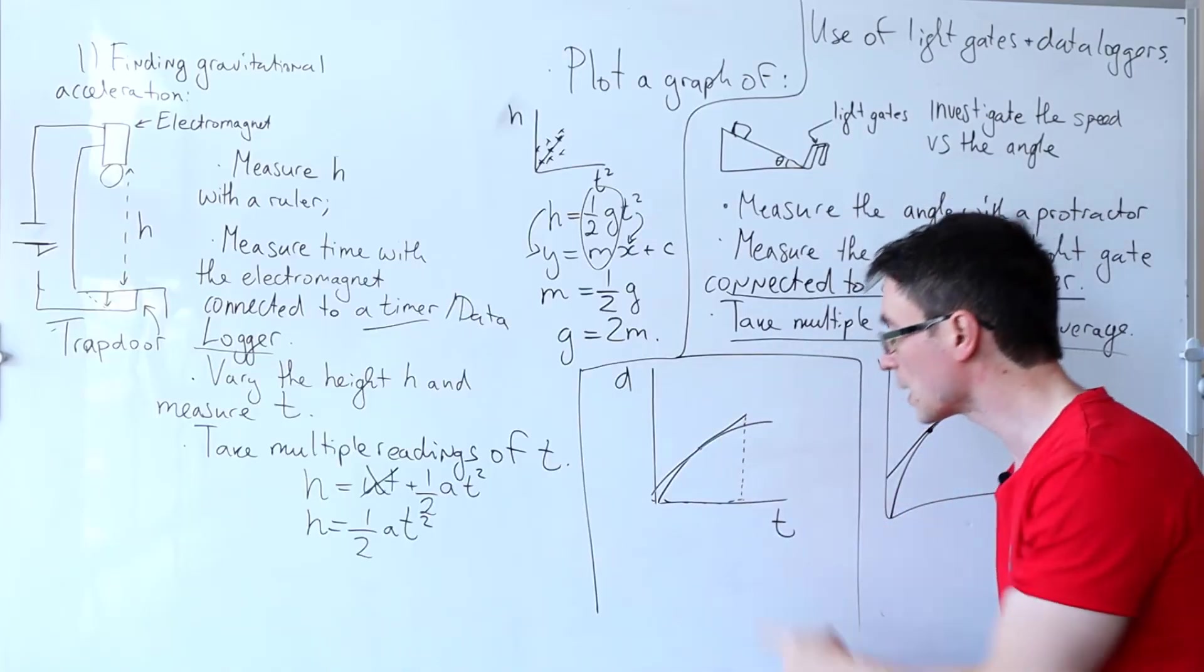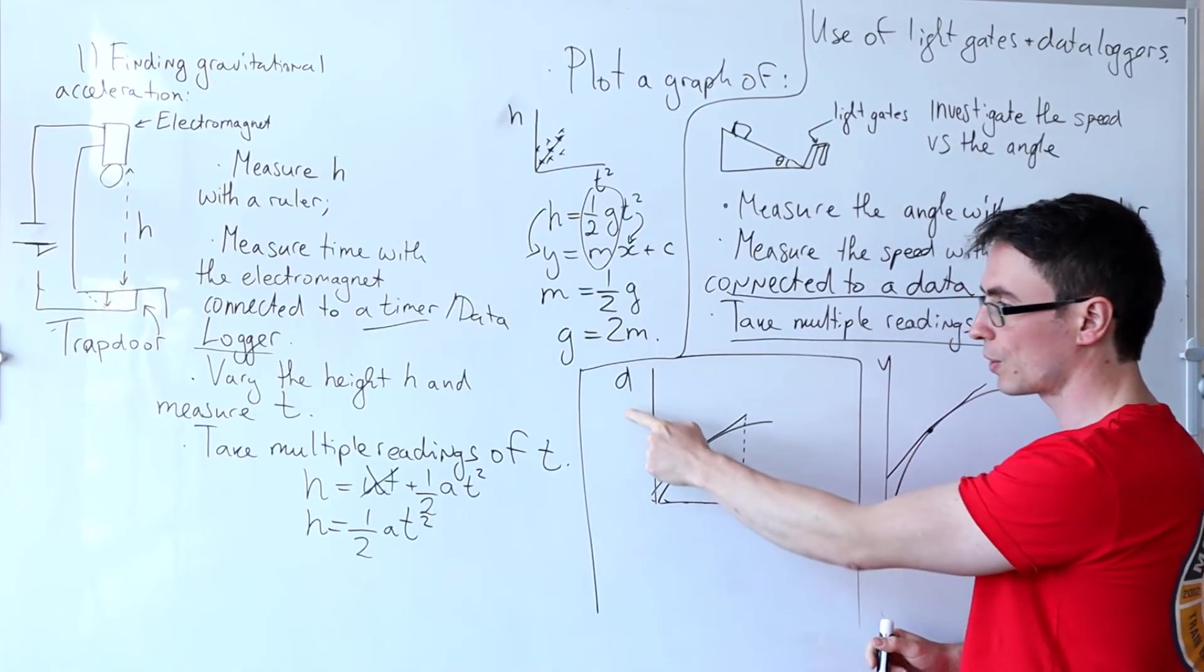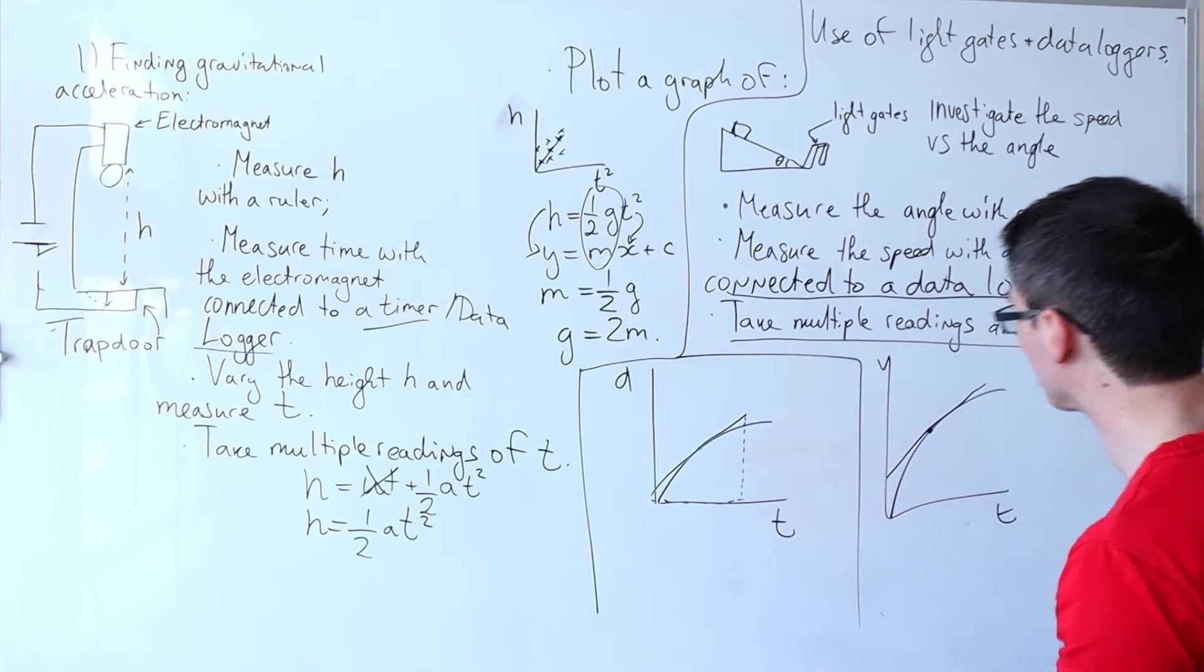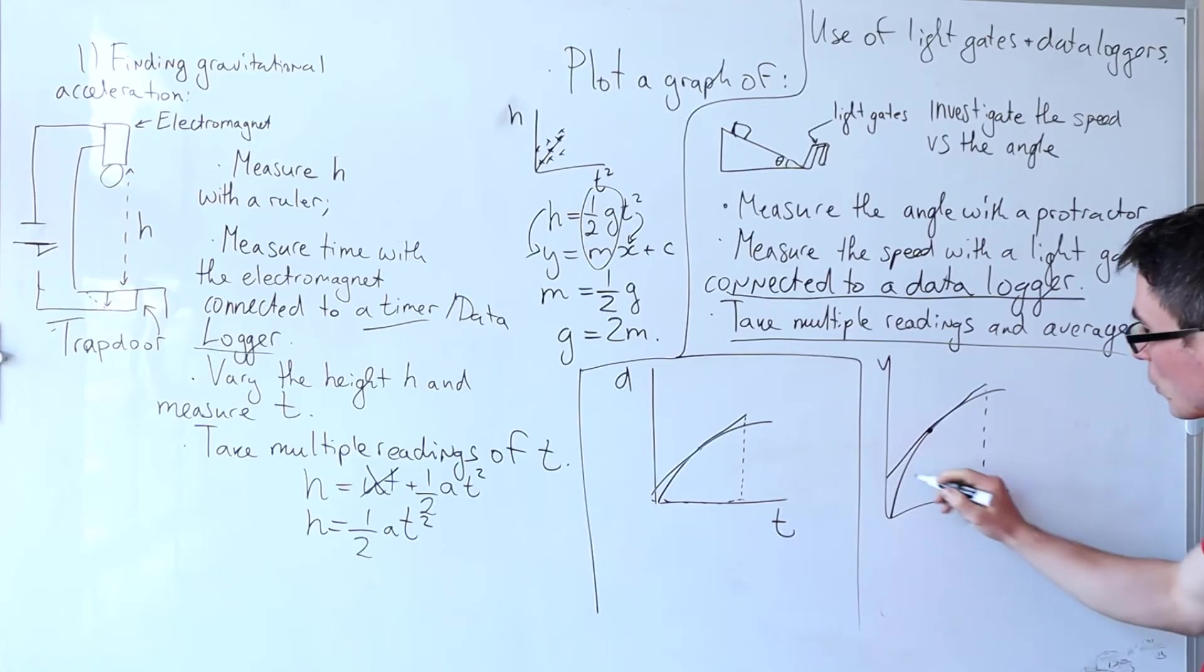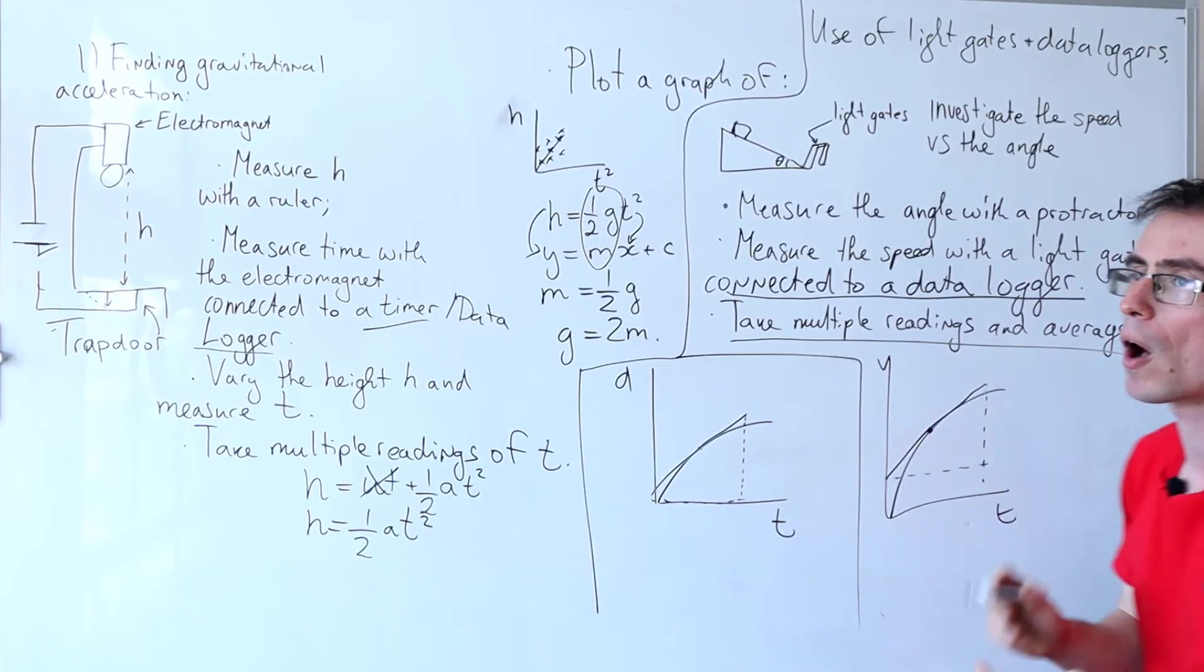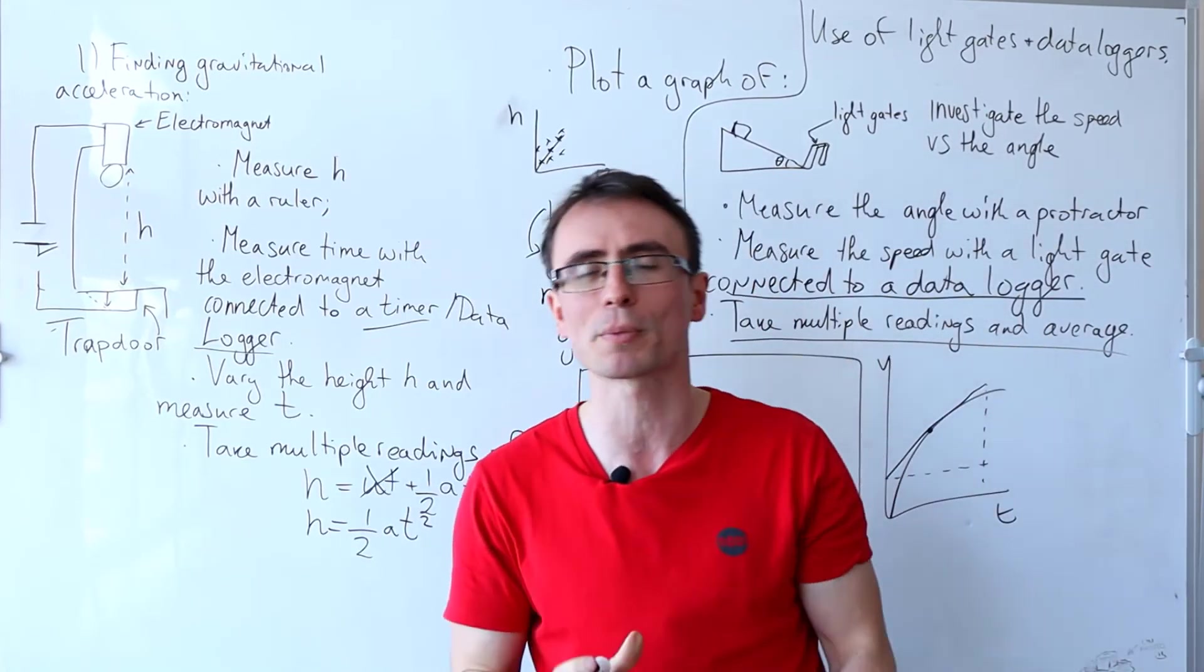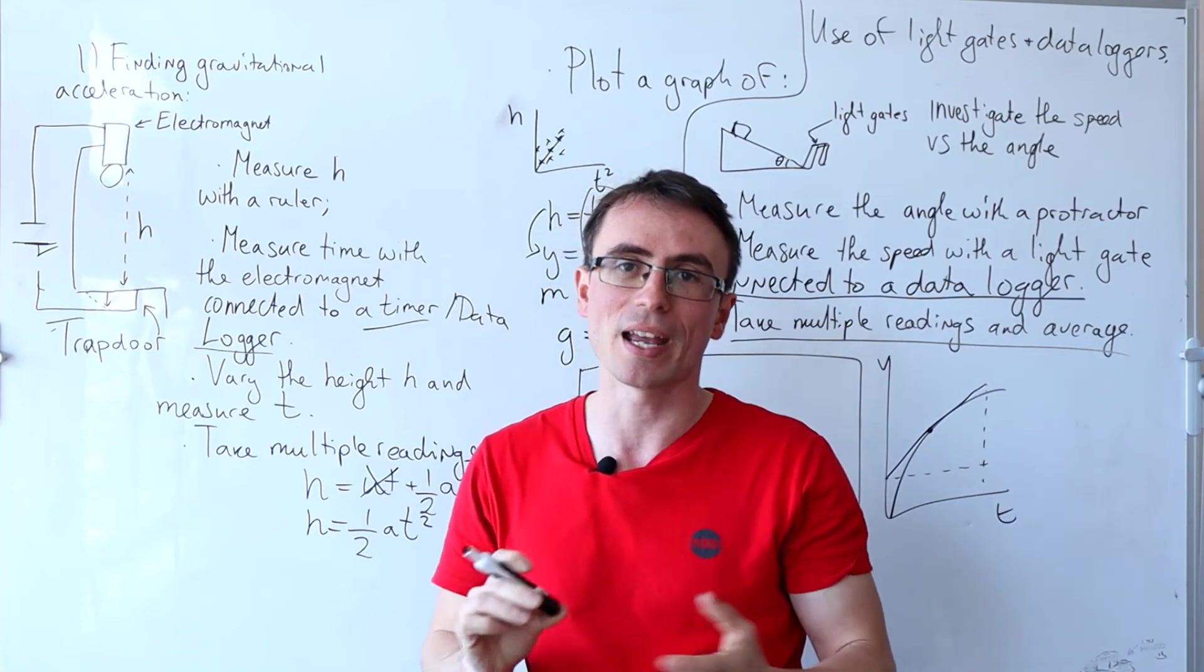The velocity is the gradient of the tangent in a d against t graph and the acceleration will be the gradient of the tangent. It is vital that our gradient triangles are as large as possible to minimize any errors.